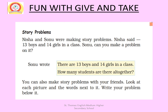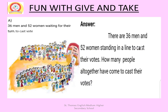Next statement: 36 men and 52 women are waiting for their turn to cast their vote. The question to make from this is: how many people altogether have come to cast their votes?